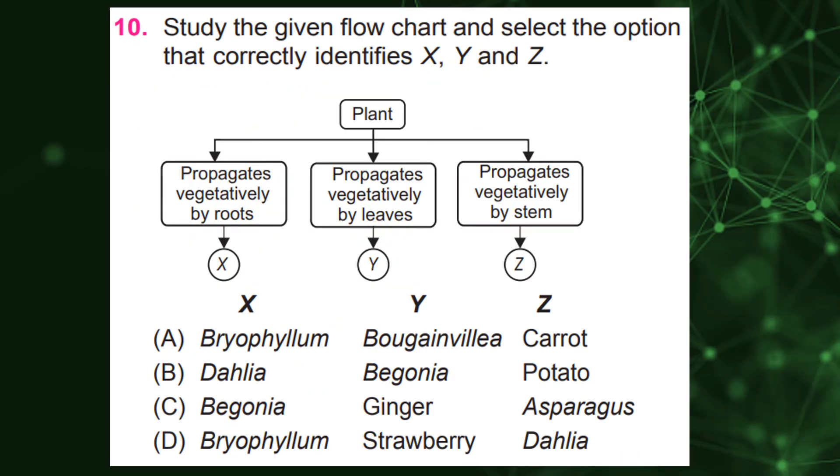Study the given flow chart and select the option that correctly identifies X, Y and Z. B, Dahlia, Begonia, Potato.